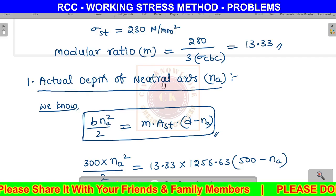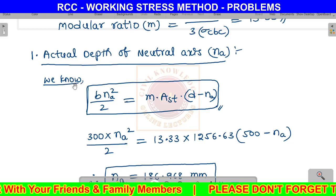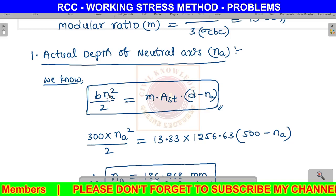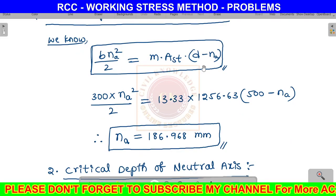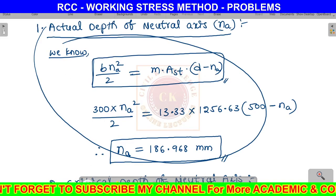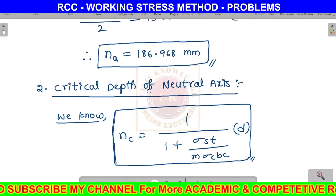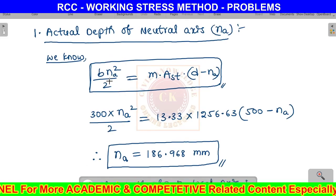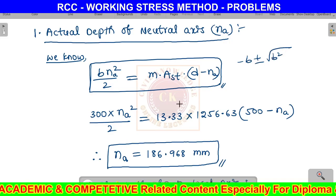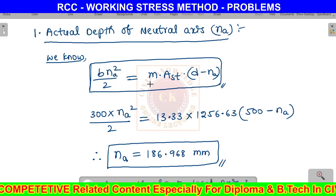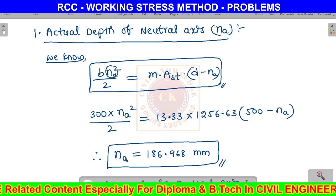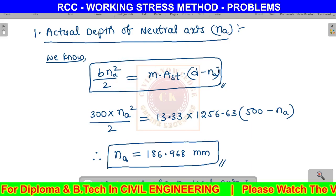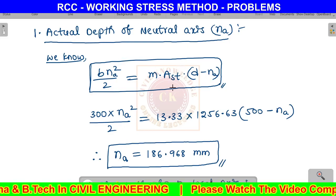First step: find the actual depth of neutral axis na. Using the formula b na squared by 2 equals m Ast times d minus na. This is the same as the last problem, where we find the depth of neutral axis first.